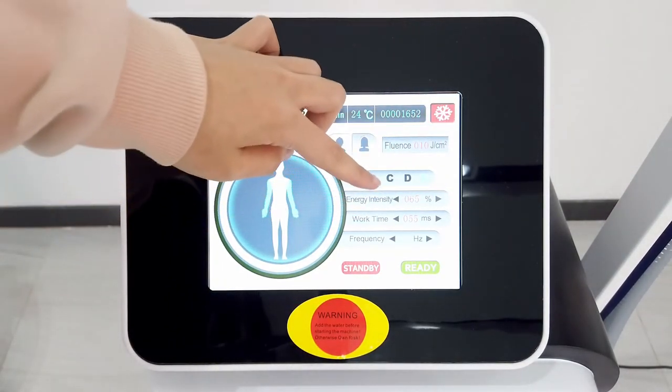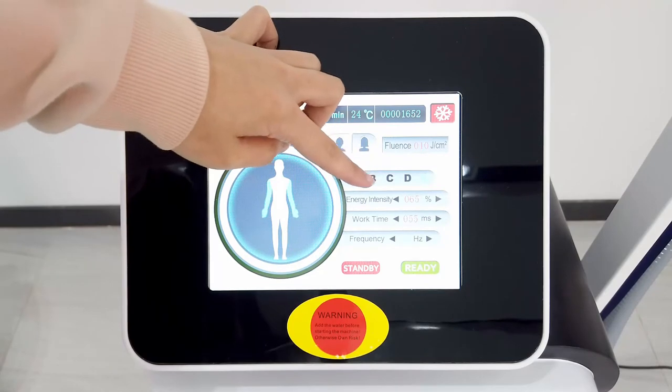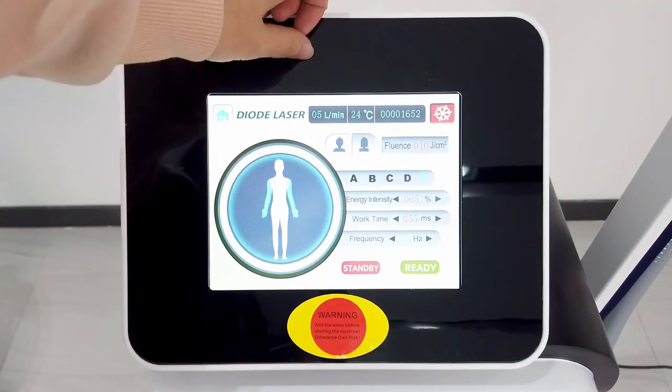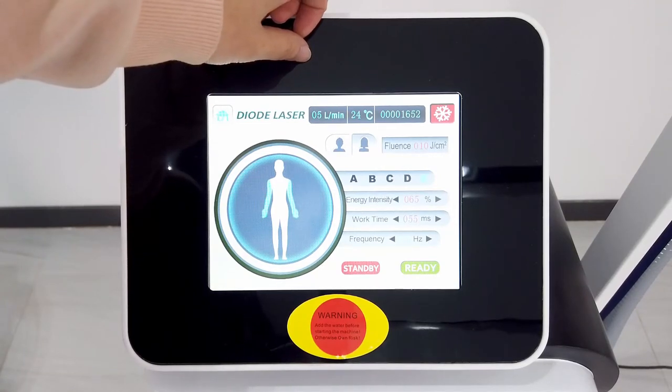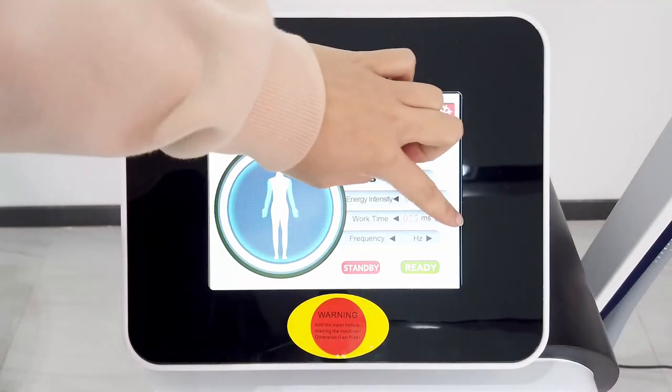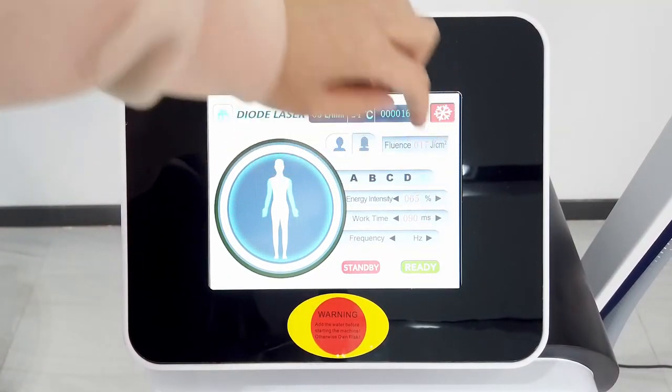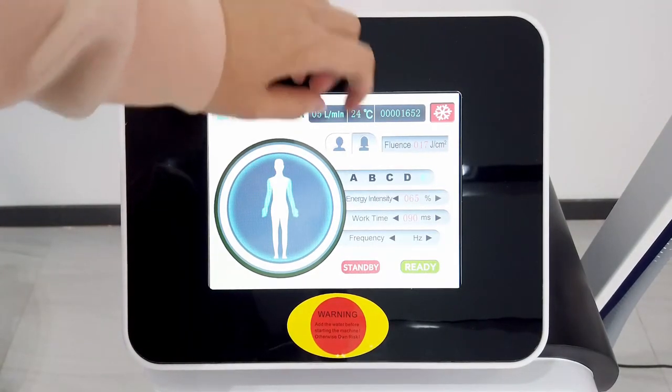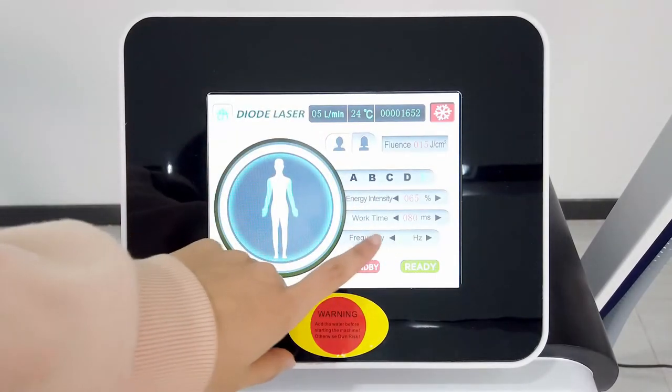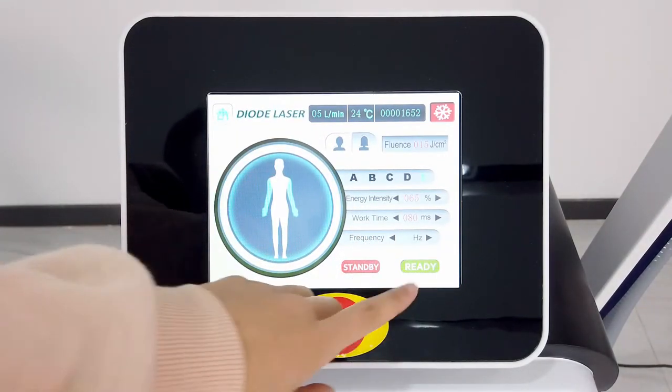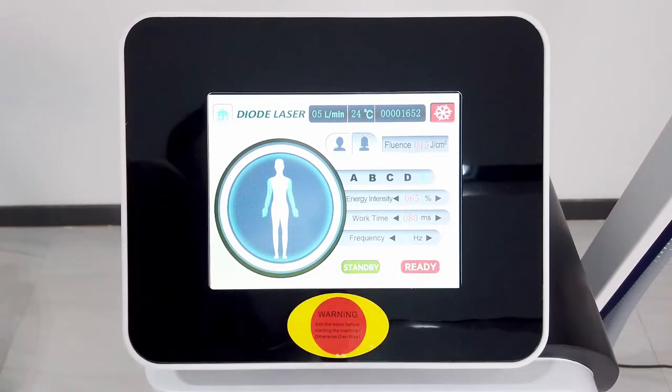And here is the work time. This one we can set according to the density of the hair. If there is more hair, we can set it to 90. And if the hair is less dense, we can set it to 80. And here is the frequency, we can set it to 2. And then click here to start working.